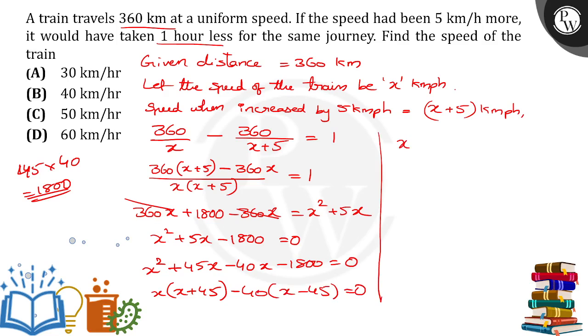Now, from these two, x minus 40 equals 0 gives x equals 40. x plus 45 equals 0 gives x equals negative 45. The value of x is 40, so the speed of the train is 40 km per hour. That's the answer.